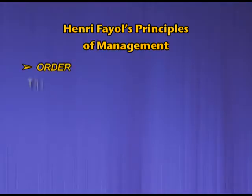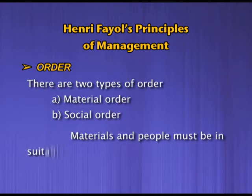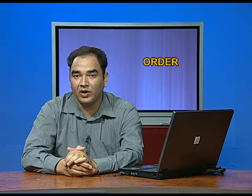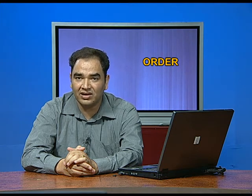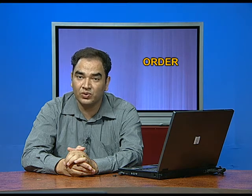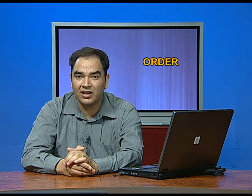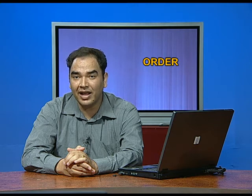The next principle is order. There are two types of order: material order and social order. Materials and people must be in suitable places at appropriate times for maximum efficiency. Here, order means each and everything should be placed where it should be — human resources and physical resources alike. For example, a technician in need of a tool must know where to find it; he should not go searching. It is the responsibility of management to fix the place of each thing and make it known to all employees.